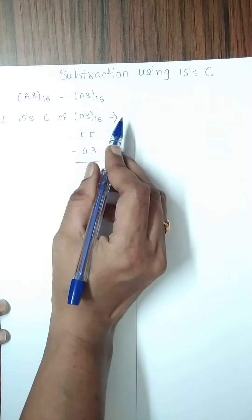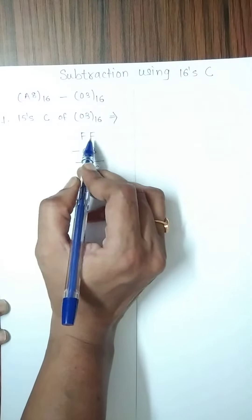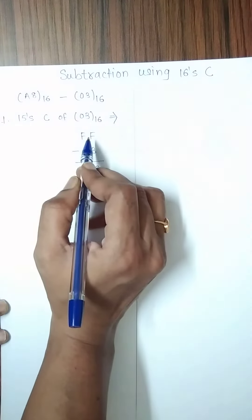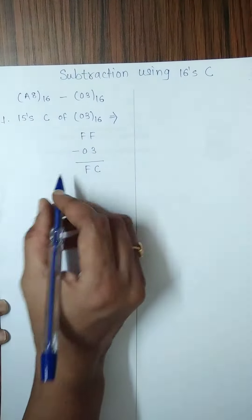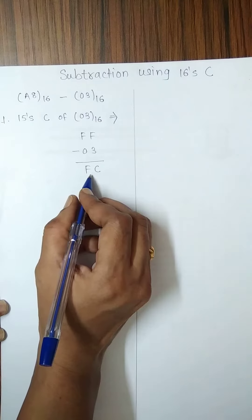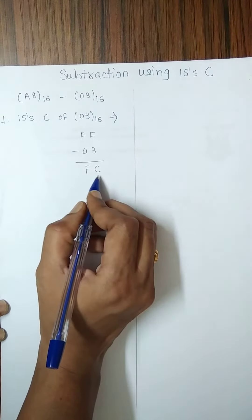the 15, which is the highest number from this hexadecimal number system, is used twice in order to subtract 03 from FF. Then 15's complement of 03 is FC.